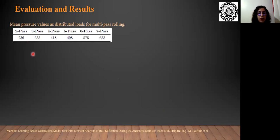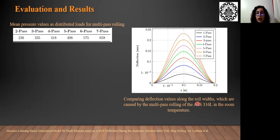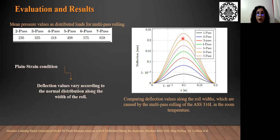Here you can see the mean pressure values as a distributed load for multi-pass rolling. As you can see, by increasing the number of passes, the values of the mean pressure increase. Here you can see that by increasing the number of passes, the deflection value also increases, and you can see the deflection values of y according to the normal distribution along the vertical roll. This is because of the plane strain conditions which we have in the strip rolling process.